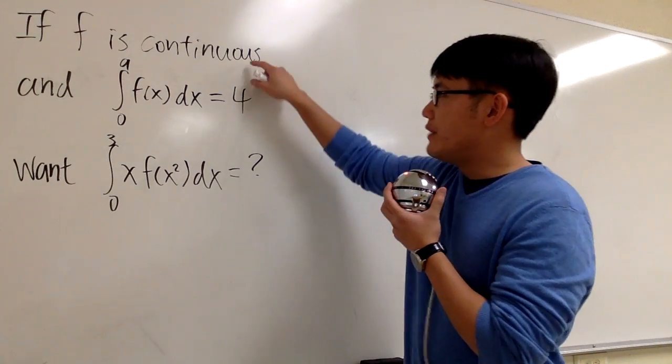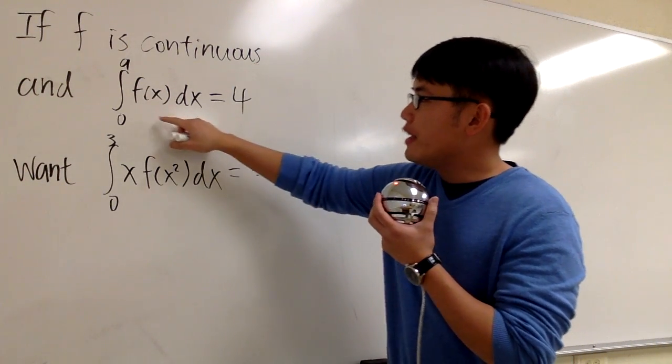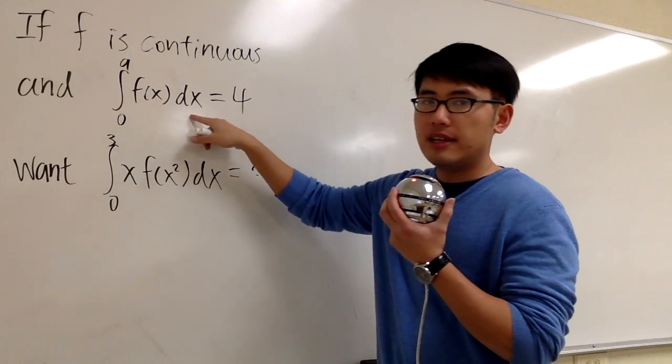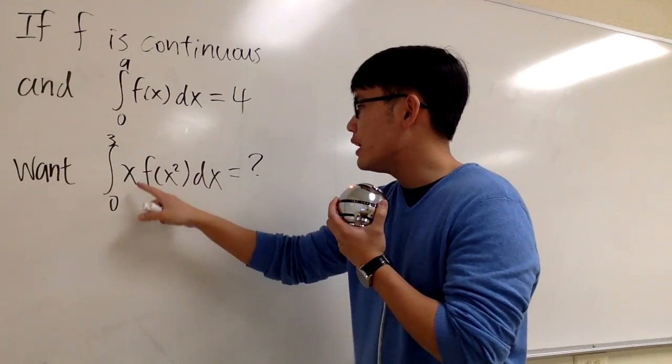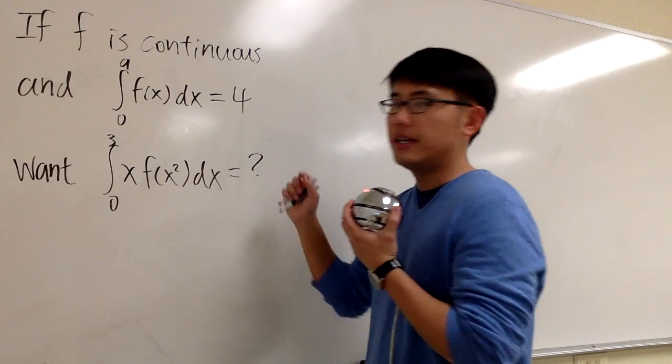Let's take a look at this question. If f is a continuous function and the integral from 0 to 9 of f(x)dx equals 4, we are trying to get the value of the integral from 0 to 3 of x times f(x²)dx.